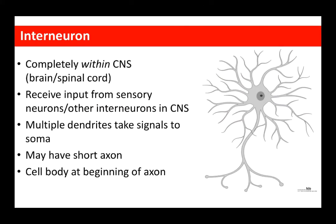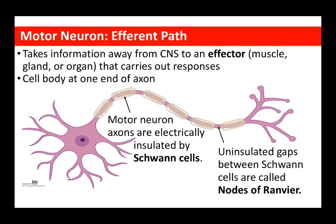Next we have interneurons, which exist completely within the central nervous system — the brain and spinal cord. The first interneurons receive input from sensory neurons, and then other interneurons receive information from other interneurons. They often have huge dendritic trees that carry the signal to the soma, and then a single axon. Sometimes these axons are very short because they're sending signals to neurons that are very close by. The cell body is located at the beginning of the axon.